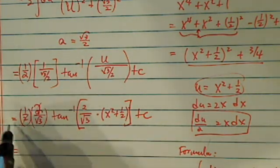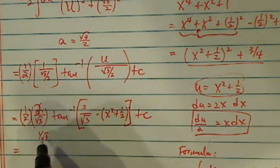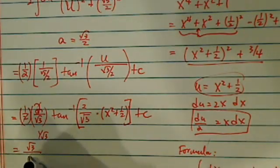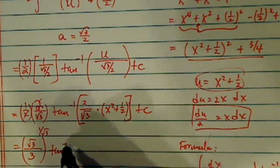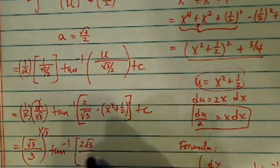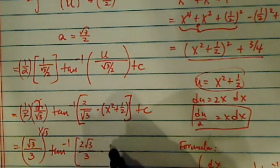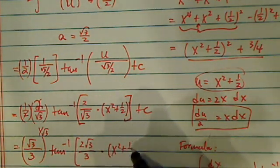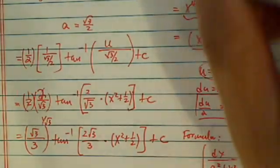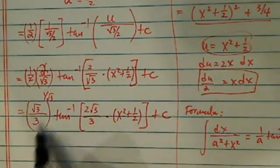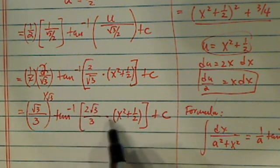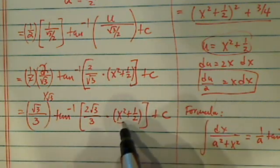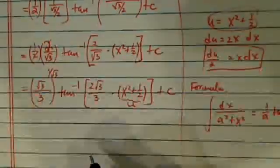So this is 1 over radical 3. I'm going to rationalize it at the top and bottom, and that's radical 3 over 3, tangent inverse, let's rationalize this one as well, 2 radical 3 over 3 times x^2 plus 1/2, plus c. So here's your complete answer: radical 3 over 3, tangent inverse, 2 radical 3 over 3 times the original variable, which is really my u, plus a constant.